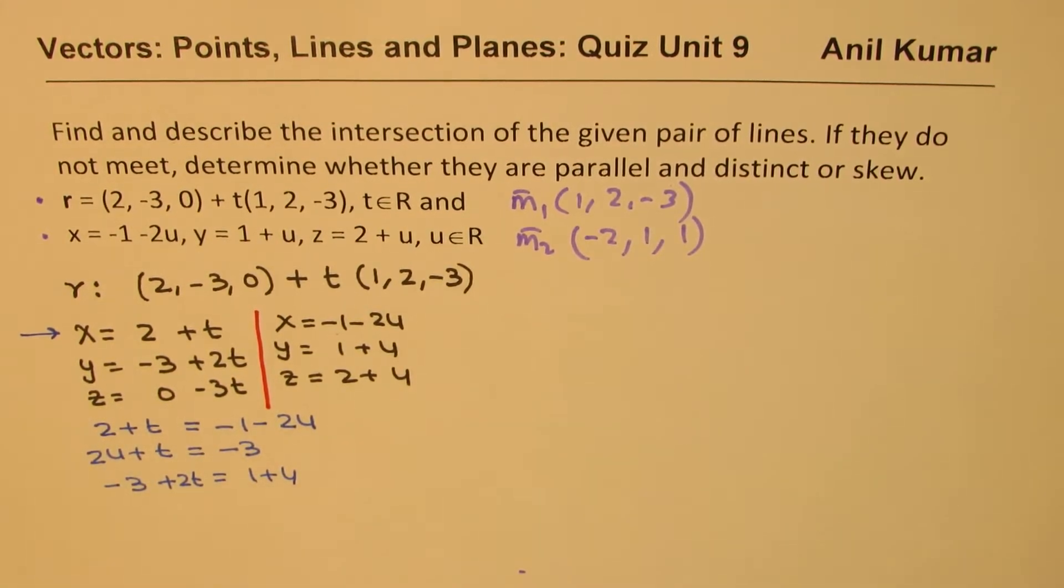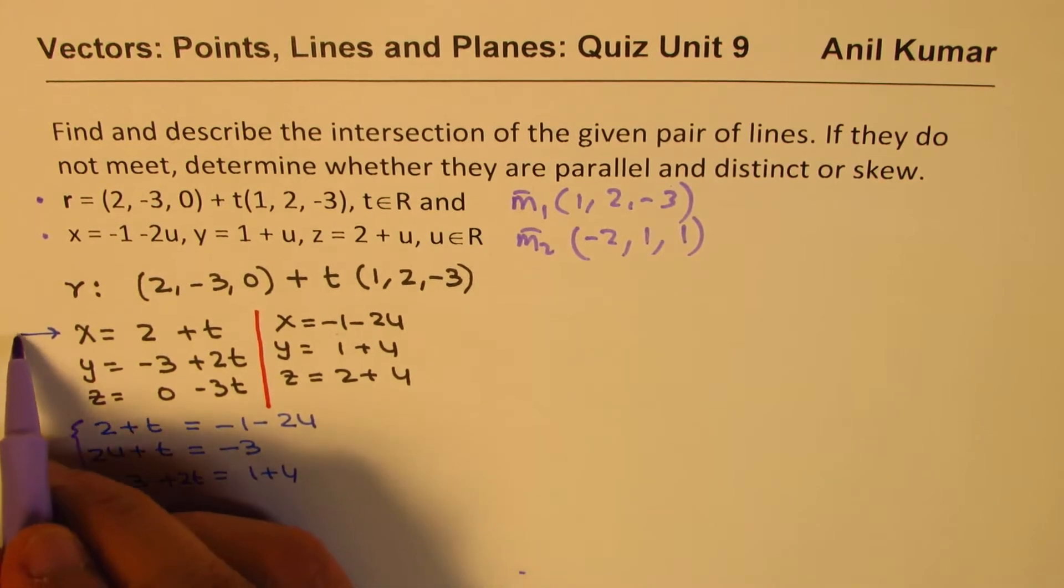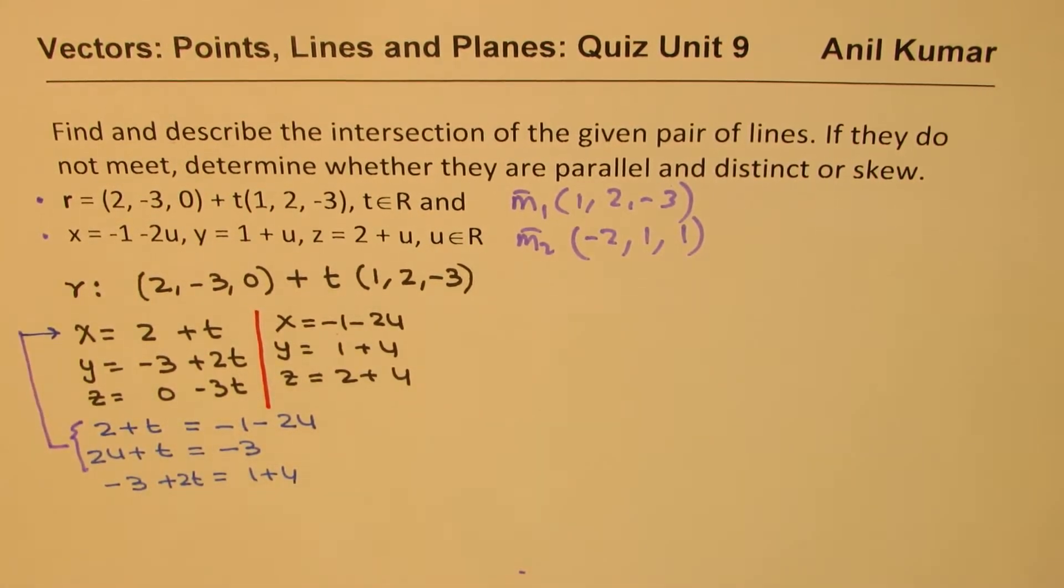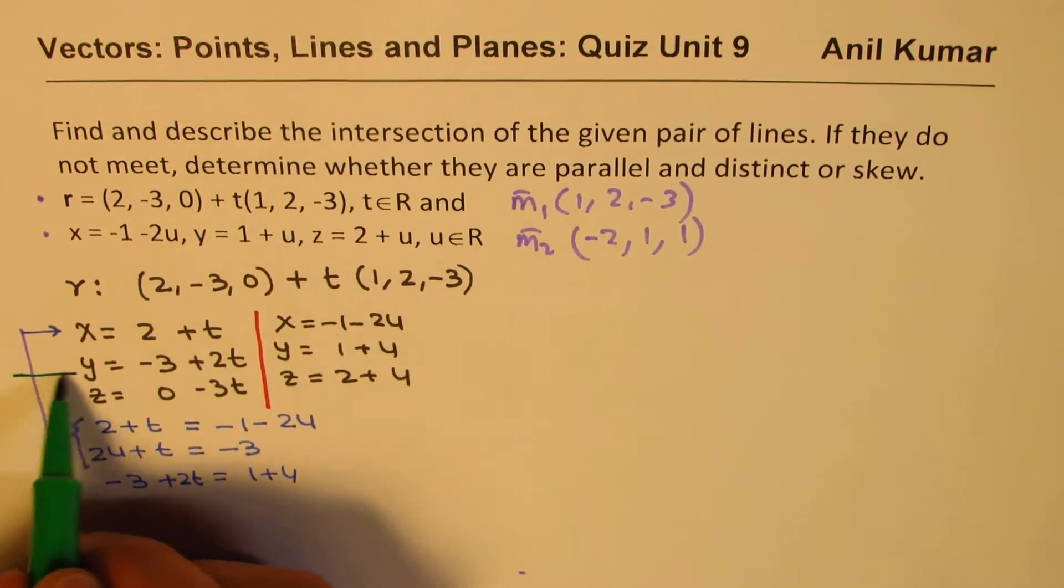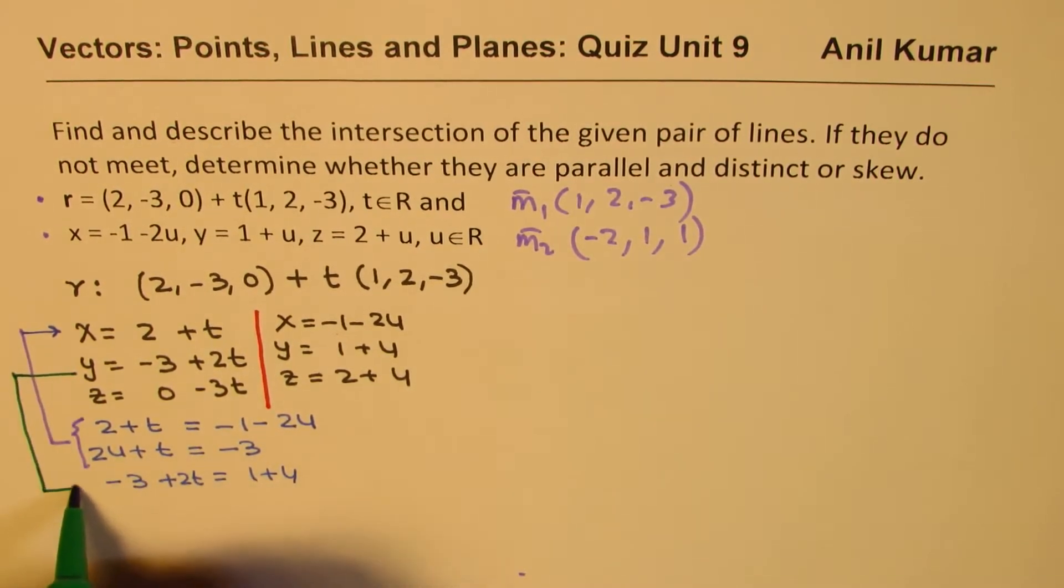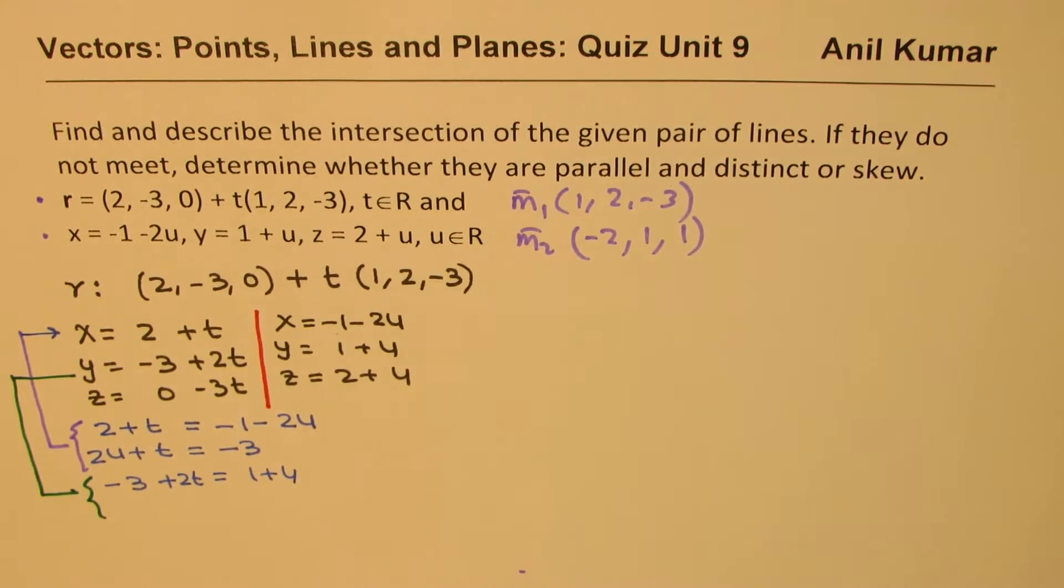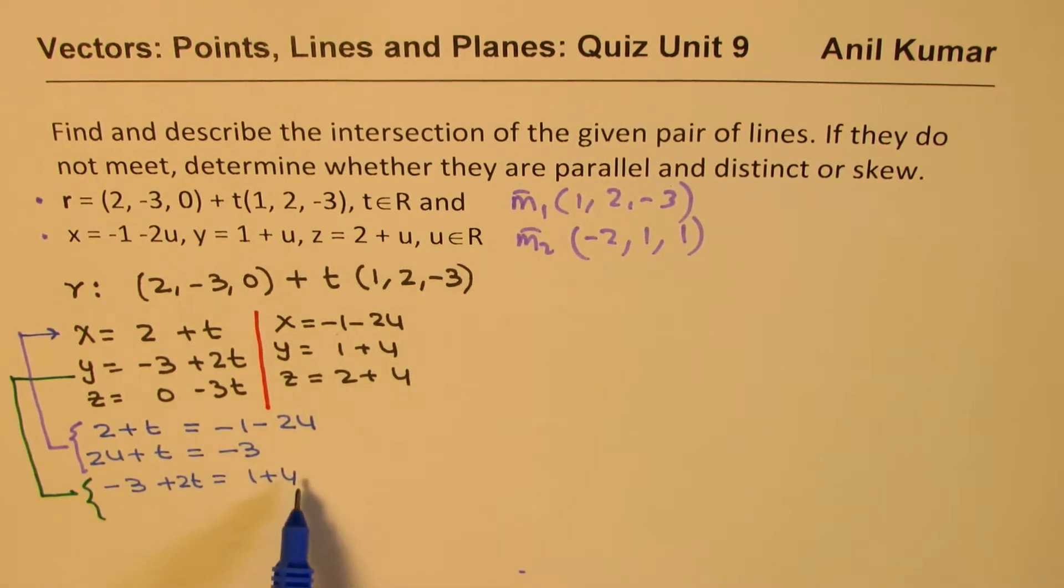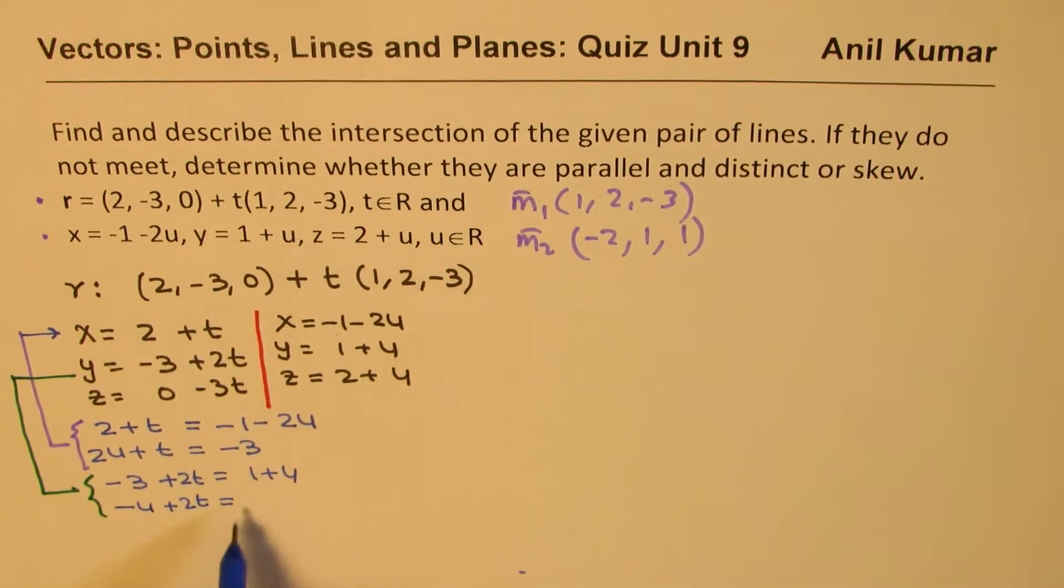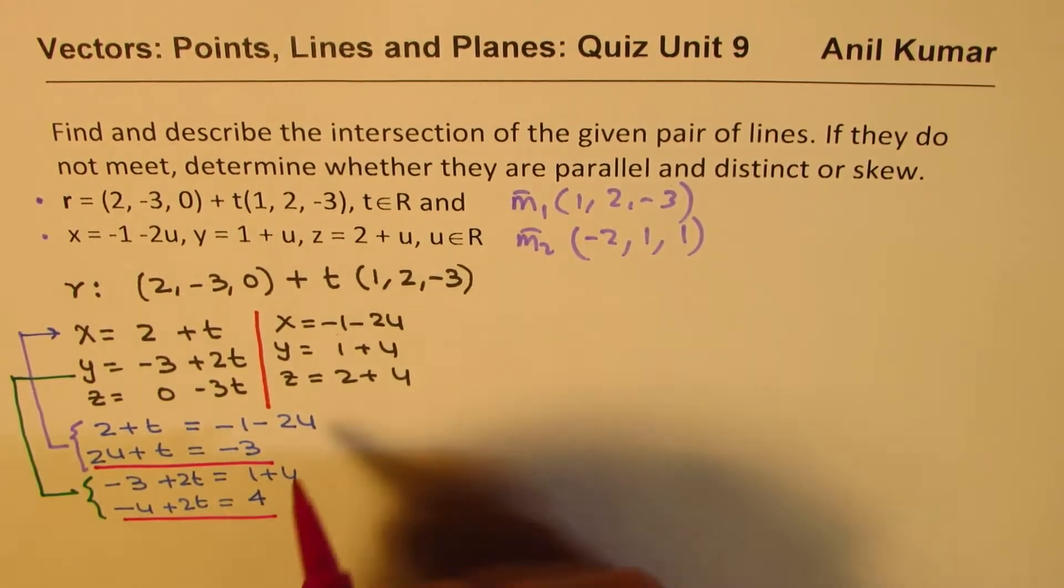Which for us is -3 + 2t = 1 + U. Now, we are comparing the second equation, right? So let's rearrange this, so we get U on this side, so we get -U + 2t = 1 + 3 is 4. Correct. So now, we have these two equations to work with.